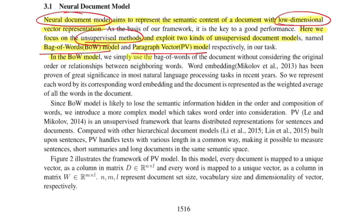In the bag-of-words model, they simply use a bag of words of the document without considering the original order or relationships between neighboring words. Each word is represented by its corresponding word embedding, and the document is represented by the weighted average of all the words. You start with pre-trained vectors like GloVe or Word2Vec, look up each word's vector, and average across all words in a sentence to get a final vector representation — this is the bag-of-words model.